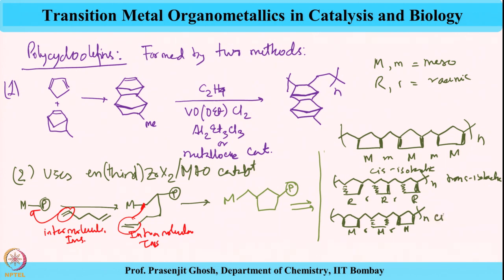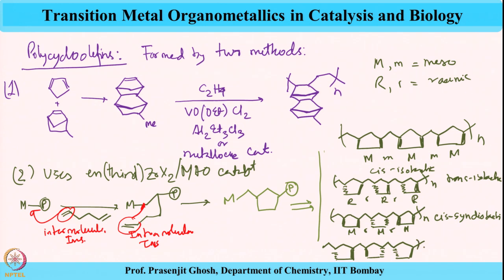Similarly, other stereoisomers are possible: trans-isotactic, cis-syndiotactic. The last possible product has the configuration R, m, R, m, R and is called trans-syndiotactic.